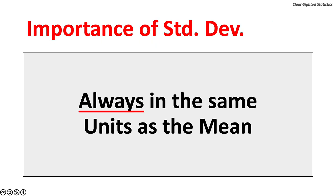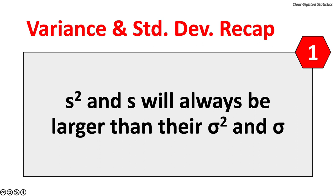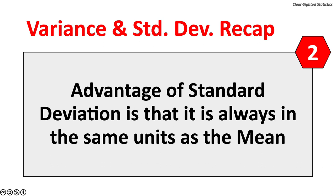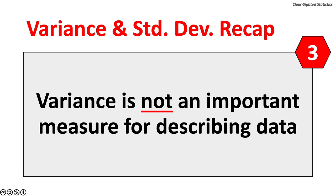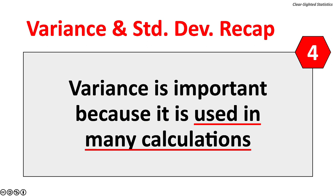Sample variance and sample standard deviation will always be larger than their equivalent population measures because the denominator is n minus 1 (degrees of freedom), which allows for sampling error. The advantage of standard deviation is that it is always in the same units as the mean, whereas variance is in the units of the mean squared. Variance is not an important measure for describing data, but it is very important because it is used in many calculations, including the standard deviation.